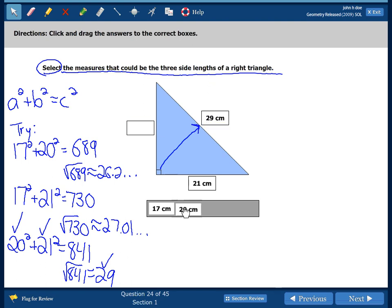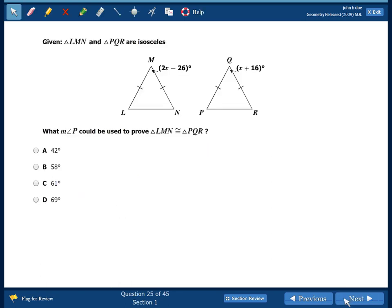Remember, it doesn't matter where these other two values go. We could have 21 and 20. Those are both good answers. The bottom line is we have to have 29 as our hypotenuse and 21 and 20 can be moved around. So find the keyword. What measure of angle P could be used to prove triangle LMN is congruent to triangle PQR?